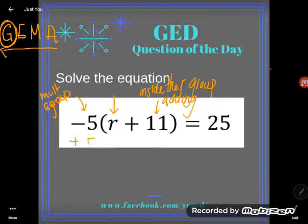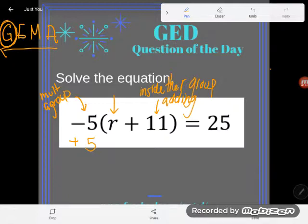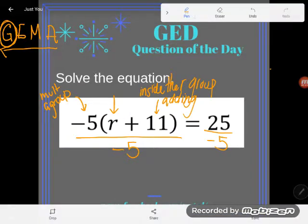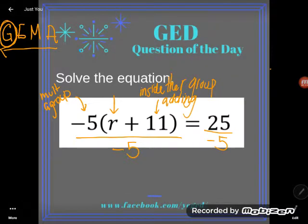You might say, how can I get rid of it? Should I add it? No way. Remember, we're supposed to do the opposite of what they're doing. What is that negative five doing with the r group? It's multiplying, so I will divide. I can do whatever I want when I solve as long as I do it to both sides. So if I divide this side by negative five as well, I'm balanced.